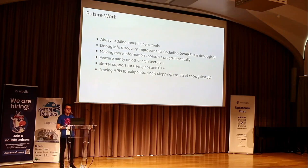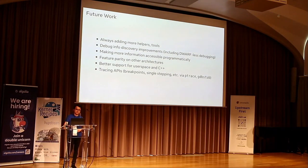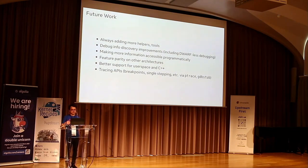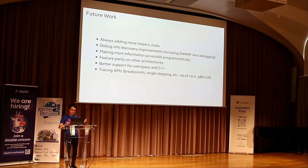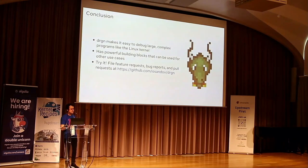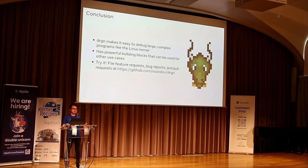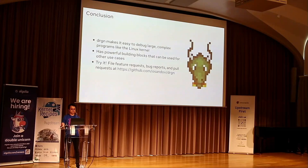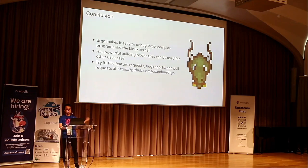Here's some future work: we're always adding more helpers, there's work in progress to add support for more architectures, better support for user space programs written in C++, including ptrace and a GDB stub. Drgn is read-only so it doesn't have breakpoints or anything like that yet. Basically, at Meta we've found that Drgn makes it really easy to debug these super complicated problems and gives you building blocks that can be used for other use cases. Please try it out, file bug reports and pull requests.